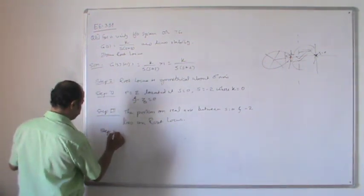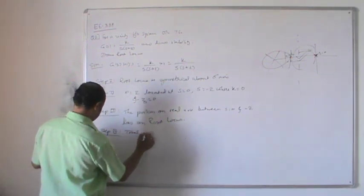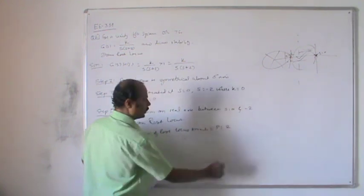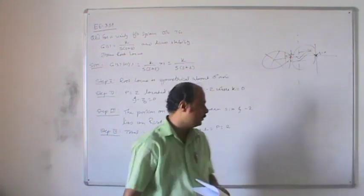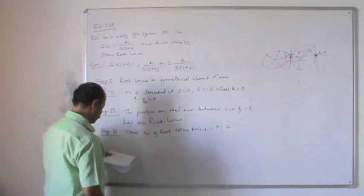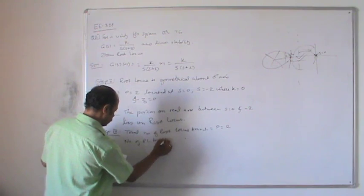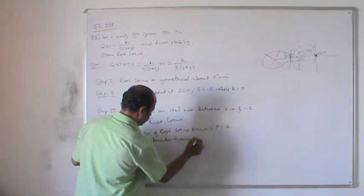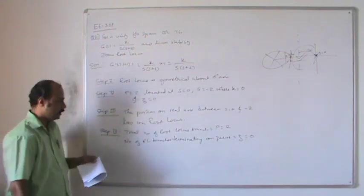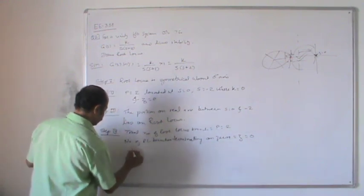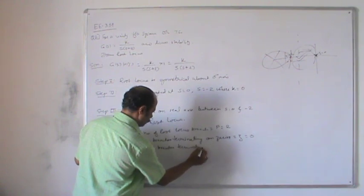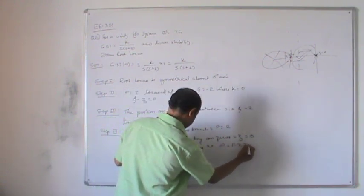Step 4: Total number of root locus branches equals p = 2. Since z = 0, all root locus branches terminate at infinity. Therefore, the number of branches terminating at infinity is p - z = 2 - 0 = 2.